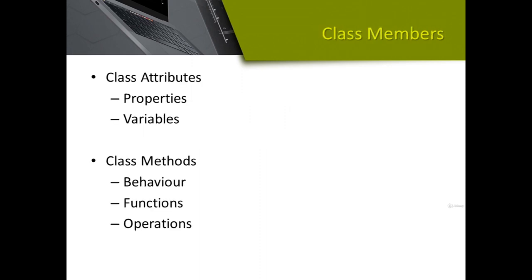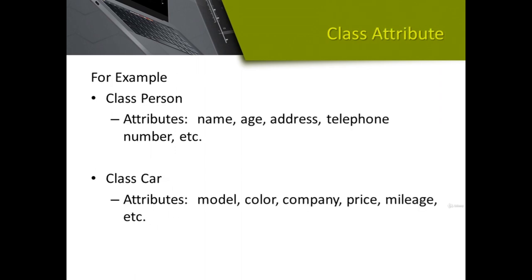Every class has a set of attributes and a set of methods. Attributes are other names used for variables and properties — variables, properties, and attributes all mean the same. Similarly, functions, behavior, operations, and methods all mean the same. Let us understand the concept of class and object in more detail.